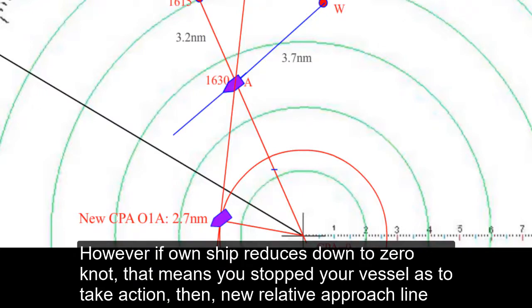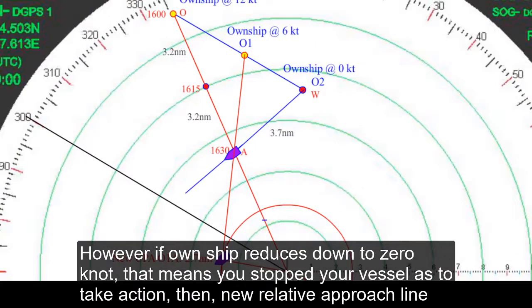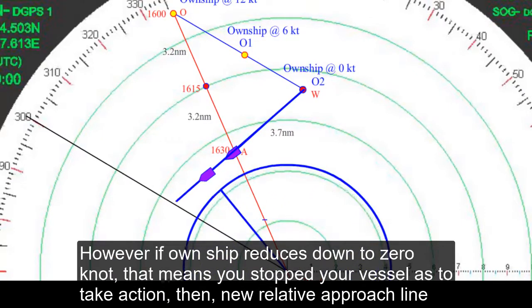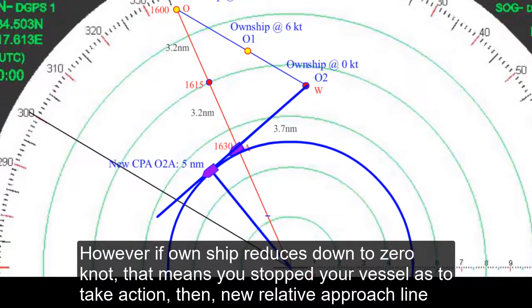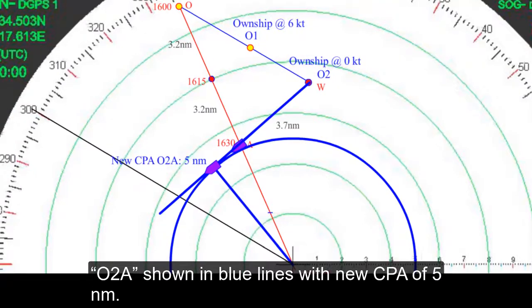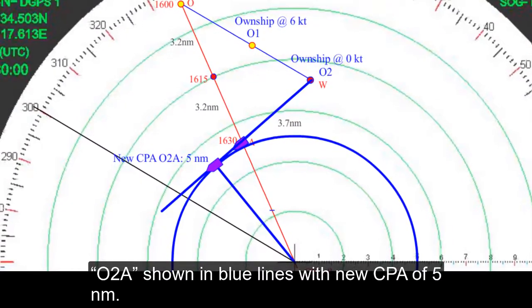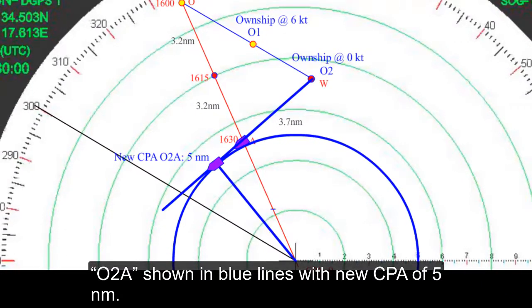However, if own ship reduced down to zero knots, that means you stop your vessel and take action, then new relative approach line O2-A shows in blue lines with new CPA of 5 nautical miles.